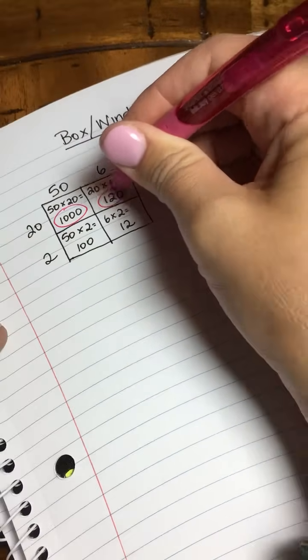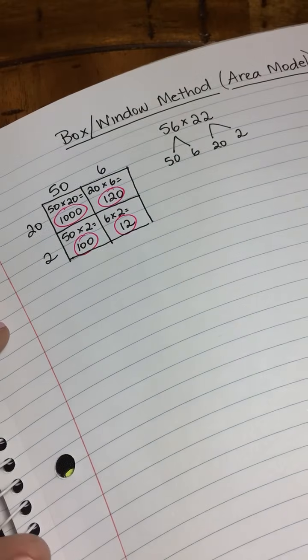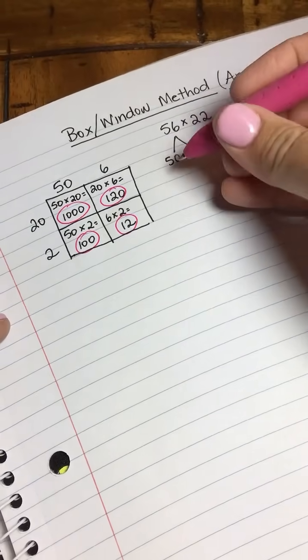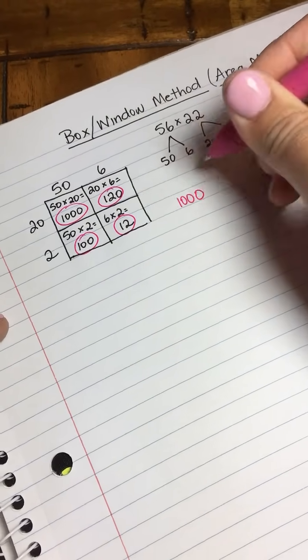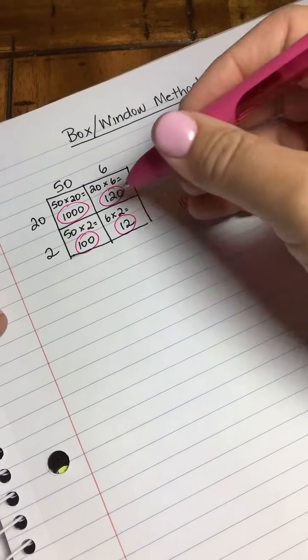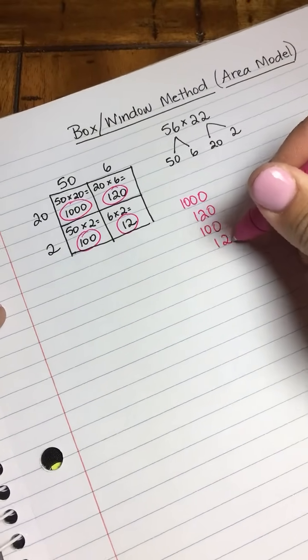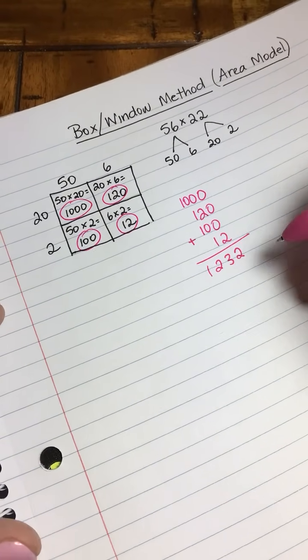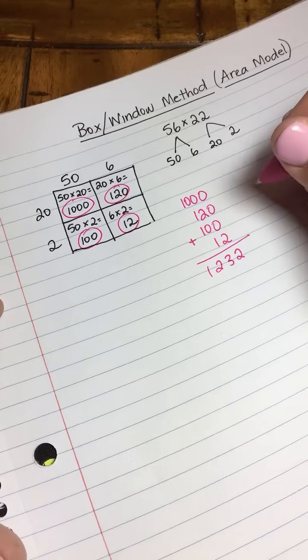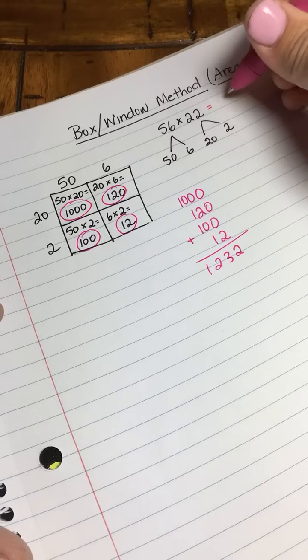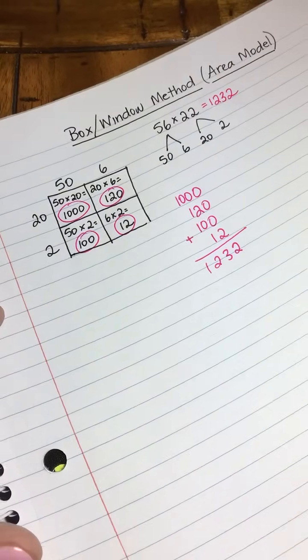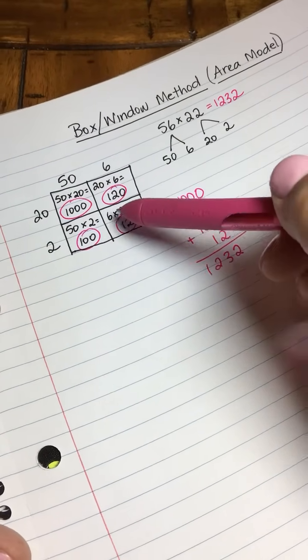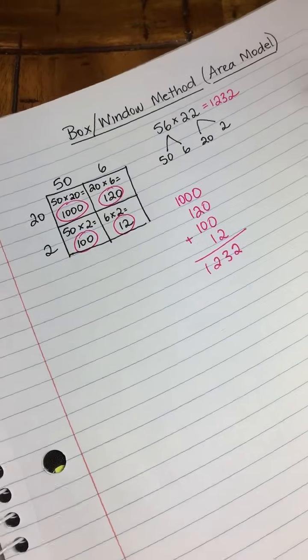To make this more visual, I'm just going to circle all of the smaller products. Now we're going to add all of those smaller products to make our final product. So we're going to add 1,000 plus 120 plus 100 plus 12, and that is going to give us 1,232. So the final product of 56 and 22 is 1,232. You're basically finding the area of each smaller square and then adding those areas together.